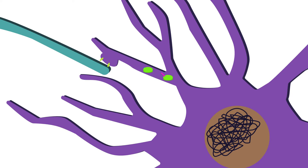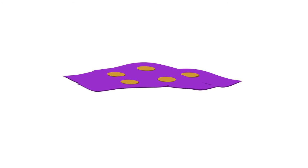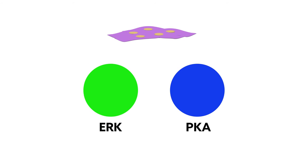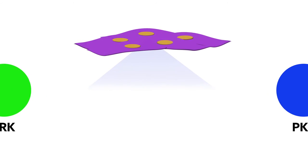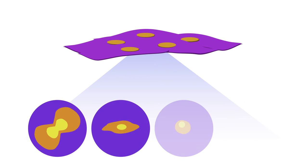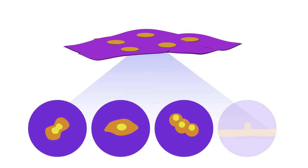The unprecedented sensitivity of the new sensors could enable scientists to further define the roles of PKA and ERK in various forms of cellular signaling, such as cell division, differentiation, and proliferation, as well as synaptic plasticity.